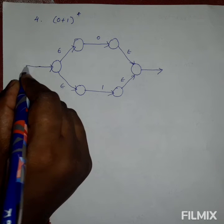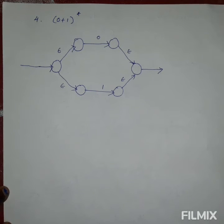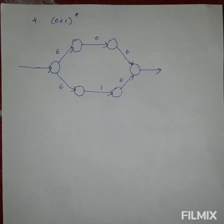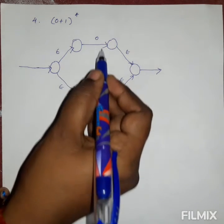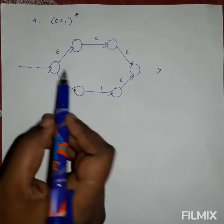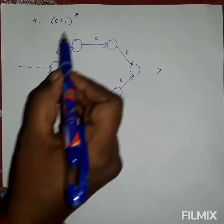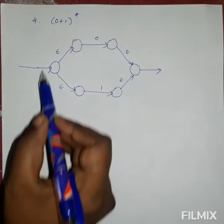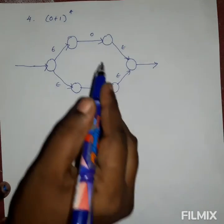For the star closure, we take the epsilon-NFA for 0+1 and add a self-loop: a back-arrow via epsilon from the end of the 0+1 block back to the beginning, so the entire expression can repeat. This loop represents zero or more repetitions. So (0+1)* takes the 0+1 block and repeats it, ending at a final state. This is the epsilon-NFA for (0+1)*.